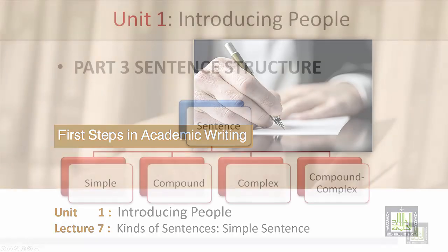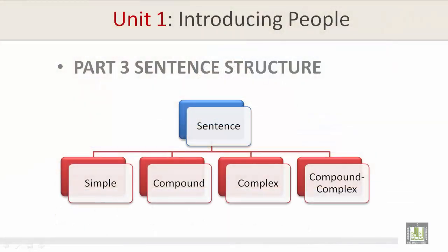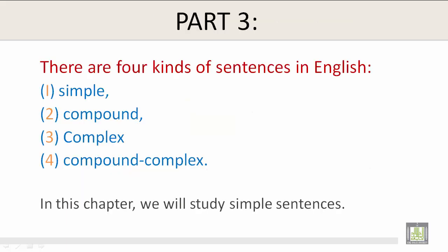Part 3: Sentence Structure. Here we have a sentence, and under the sentence there is simple, compound, complex, and compound-complex. There are four kinds of sentences in English.